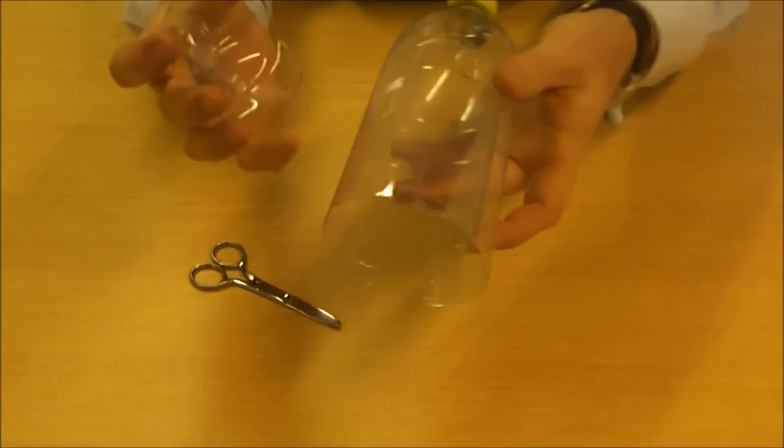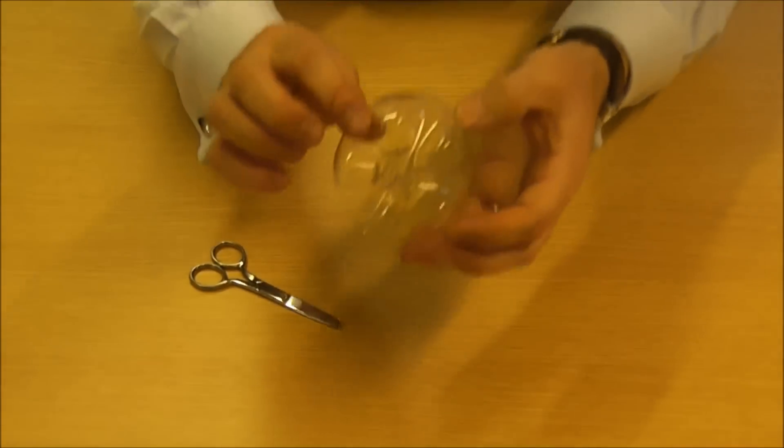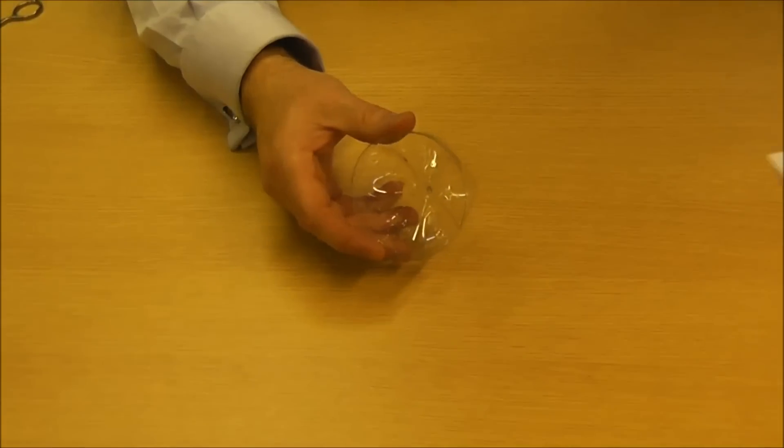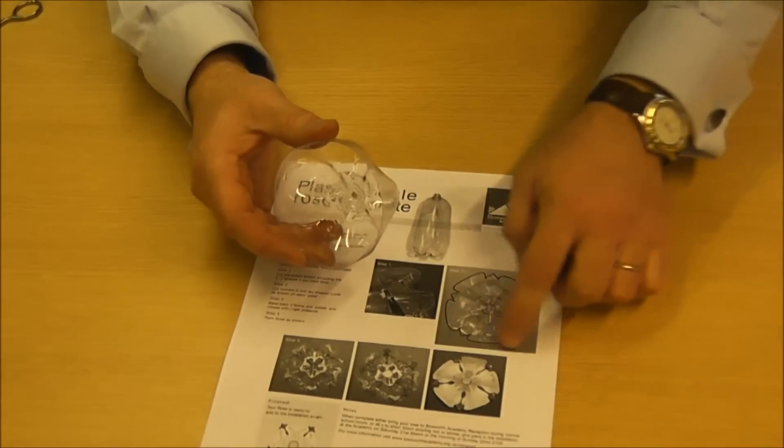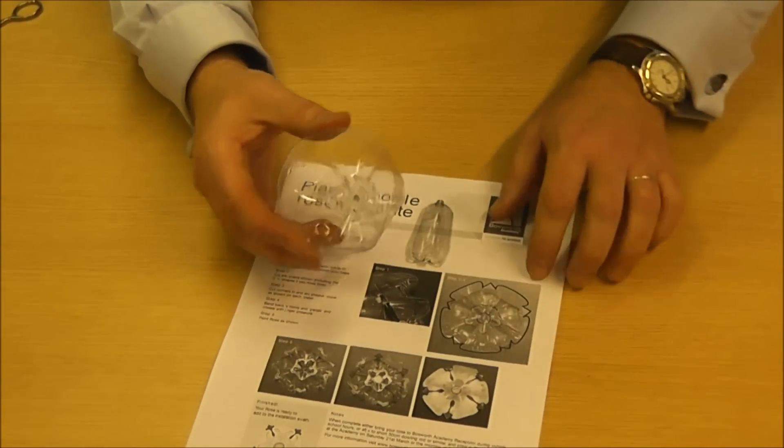We have the two pieces. Discard this one and this is the piece that you'll need. We're going to follow this cutting form here to make the rose.